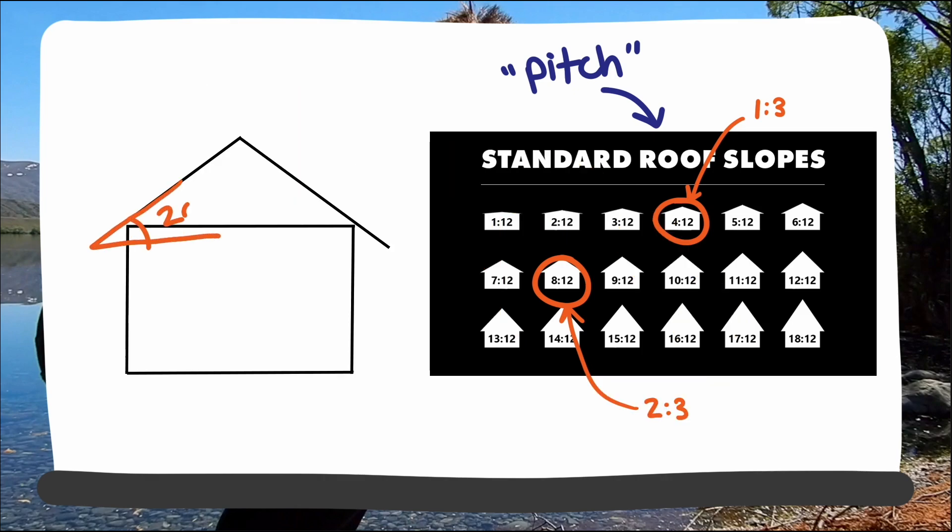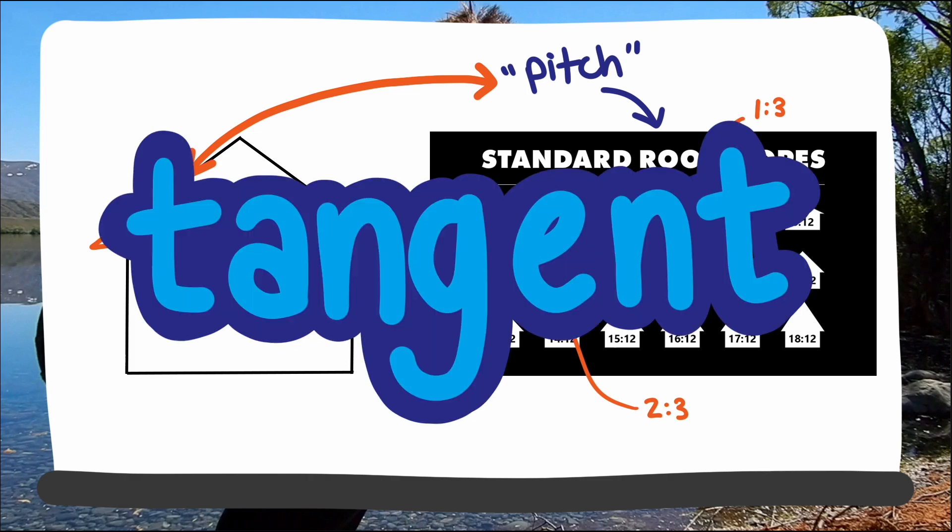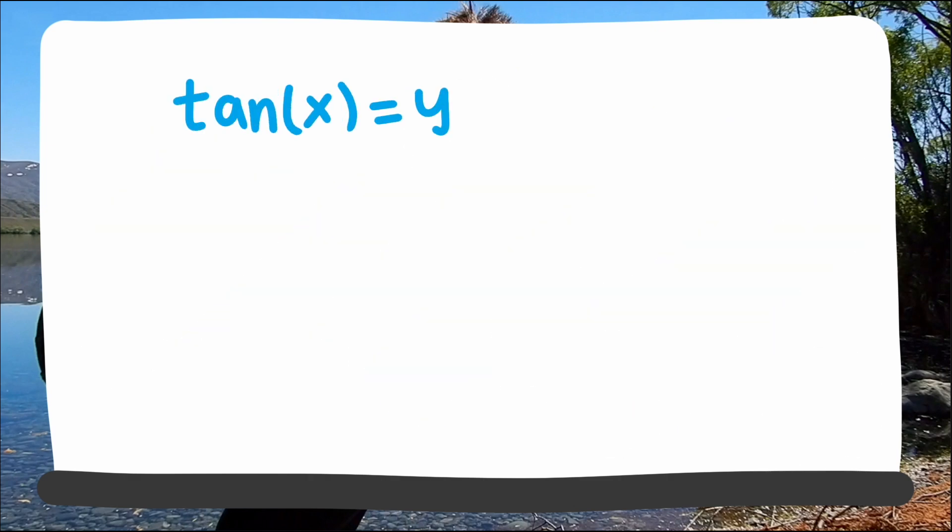Well, what is the pitch of a roof that is 20 degrees? We need a way to connect the pitch, or slope, to the angle. Mathematicians have already developed a function to do that. It's a trig function called tangent. The tangent function takes in an angle in degrees or radians and gives out the slope of the line at that angle.